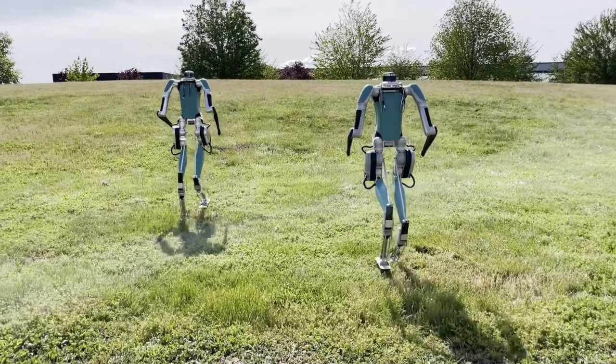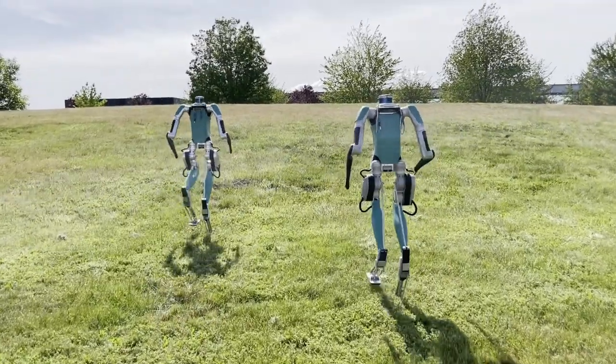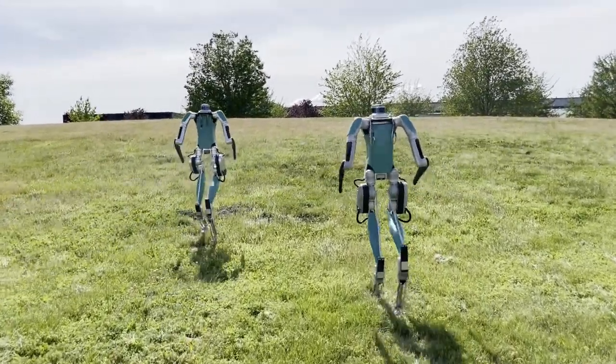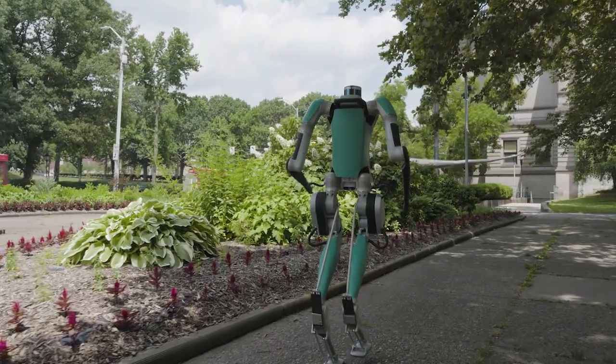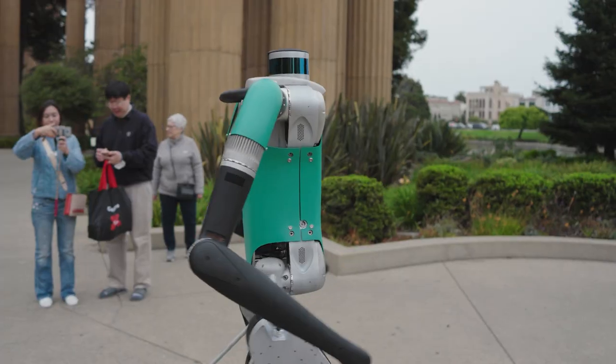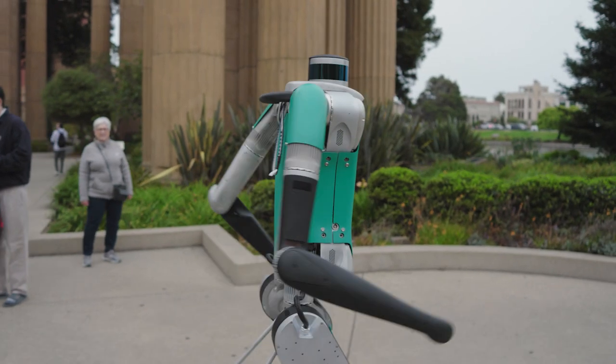But as we thought about all the different locations to put arms—just for the mobility purpose, for walking around, and how to balance the inertia of the legs swinging—honestly, having a pair of arms on either side to counter that is the best place for that purpose.